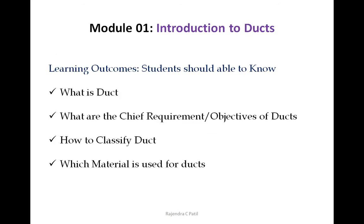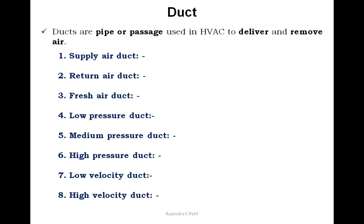We will start with Module 1: Introduction to Ducts. The learning outcome of Module 1 is at Bloom's level 1 — remembering. Students should be able to know what a duct is, what the chief requirements or objectives of a duct are, on what parameters duct classification is done, and which material is used for ducts.